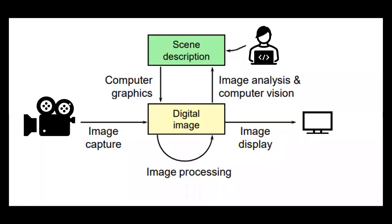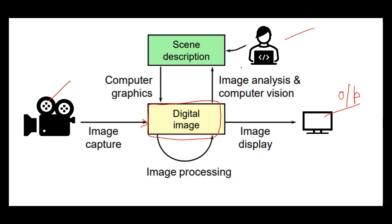So here you can see this is a captured digital image — image capturing — and here is the image display, which is the output screen. Whenever an image is captured, it is sent into the computer or any electronic gadget for processing. This is the digital image. The user who wants to modify the image uses image analysis and computer vision. With the help of computer graphics, it sends the data and there is image processing, and the final output is displayed on the image display.